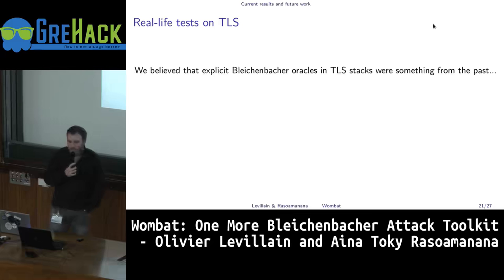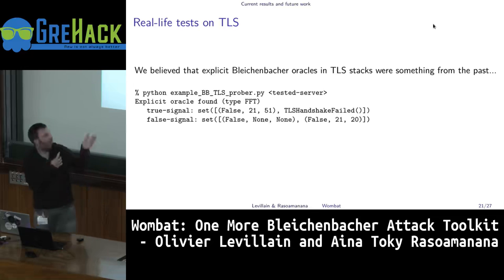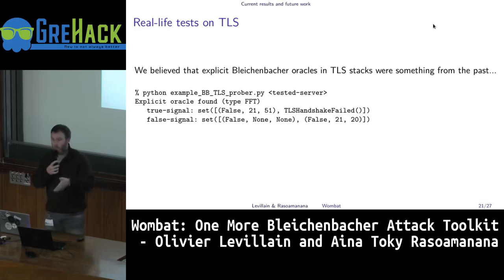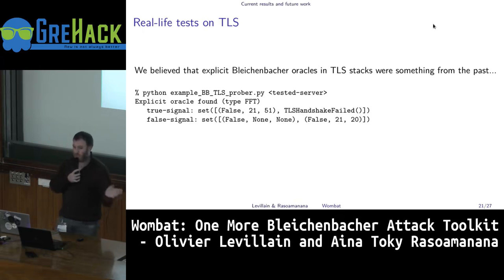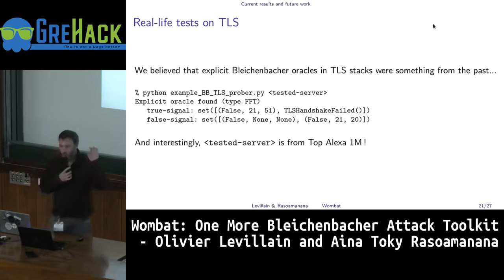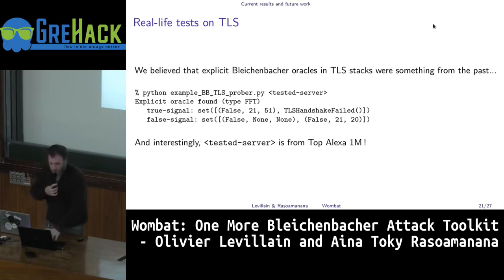We tried some real-life tests on TLS using our prober. We kind of believed that explicit oracles would not be easy to find, but we tried this on some servers and found exactly that — some servers exhibit a behavior where you can distinguish just by looking at the messages you receive. It is a truly explicit oracle. The tested servers were from the top Alexa 1 million, which was a surprise to us, because we were not expecting very common websites to still have this problem.